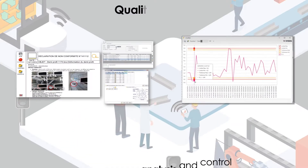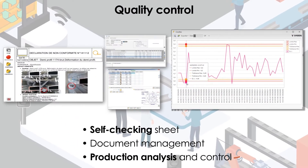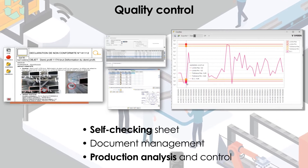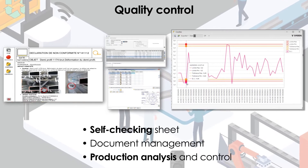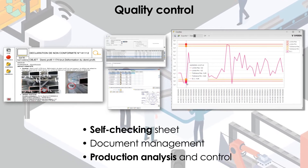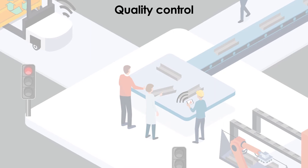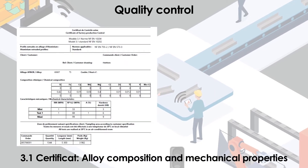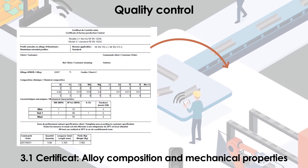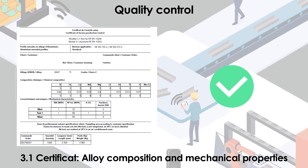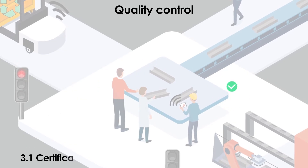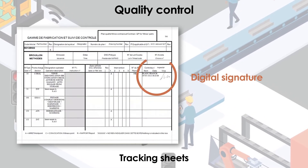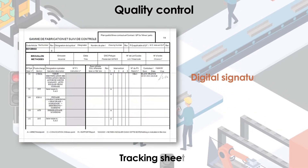Document management allows the operator to find all the documents associated with the current production on his interface. KM Extrusion ensures the digitization of quality control processes and scrap declarations, allowing for easy analysis and permanent traceability. The quality and tracking sheets are also digitized in KM Extrusion.